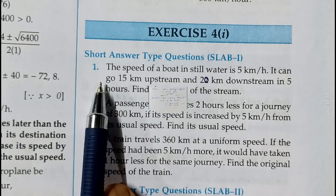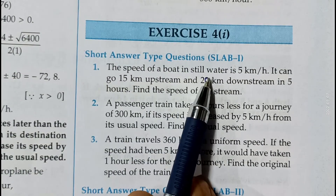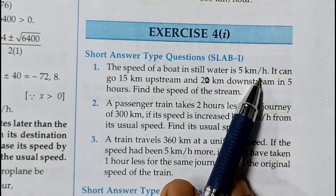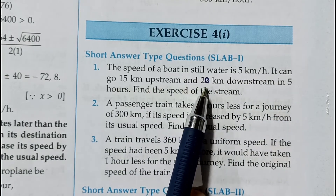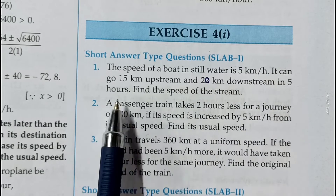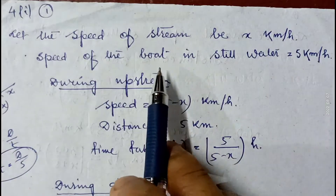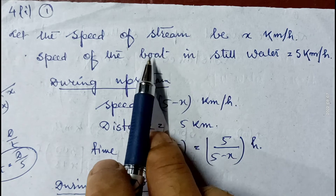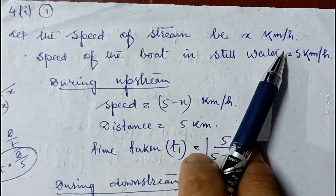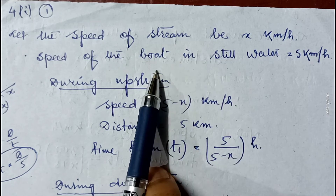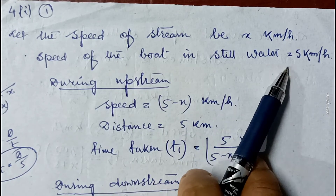Question number 1: The speed of a boat in still water is 5 kilometer per hour. It can go 15 kilometer upstream and 20 kilometer downstream in 5 hours. Find the speed of the stream. Since we have to find the speed of the stream, let the speed of the stream be x kilometer per hour, and speed of the boat in still water is 5 kilometer per hour.